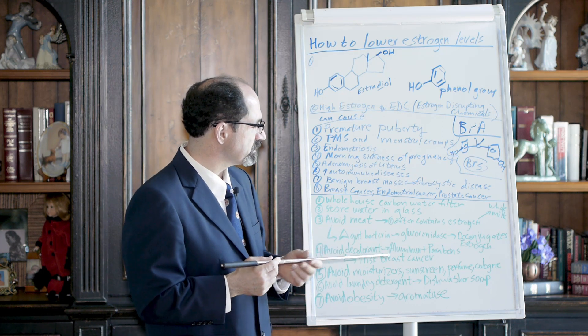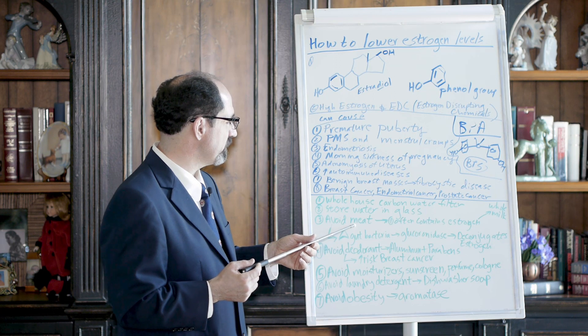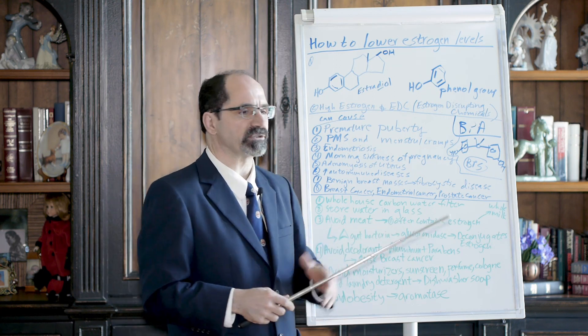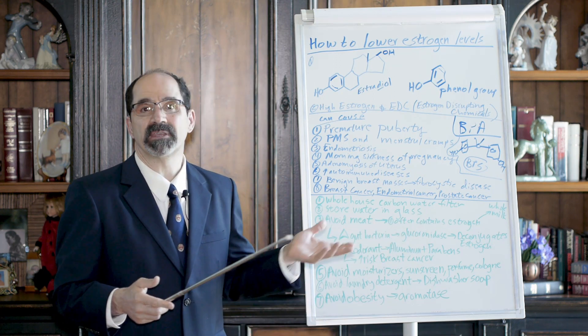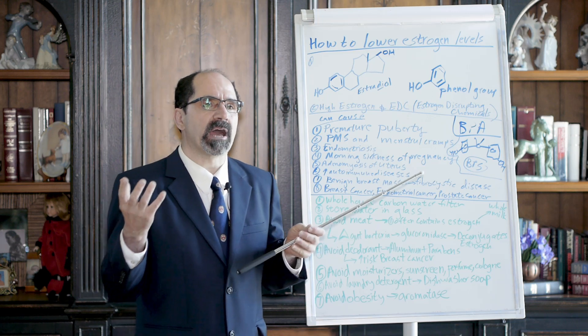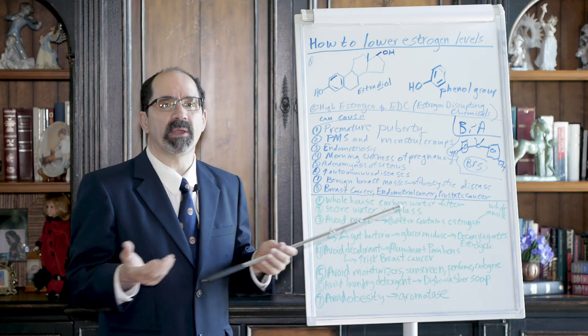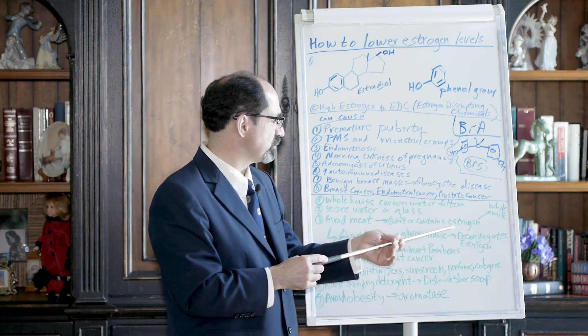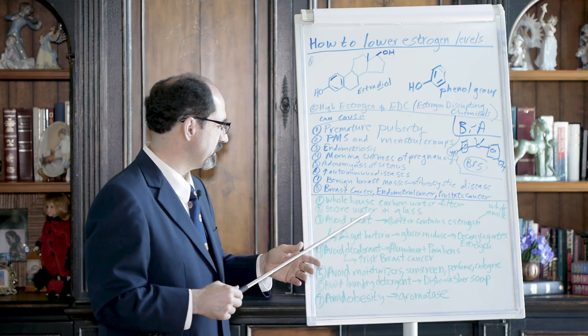Avoid meat. Meat is a screw job for estrogen. They often give estrogens to the animal, like a chicken, to help it grow faster and gain weight faster. Estrogen in high amounts tells the body that it's pregnant, store weight for the baby. So it increases weight gain. When you're eating that chicken, you're eating that.